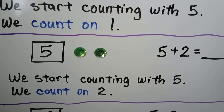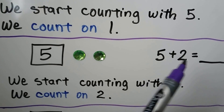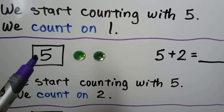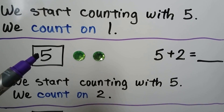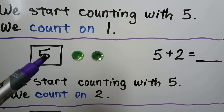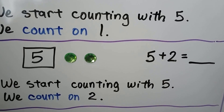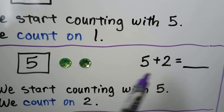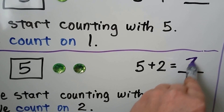If we have 5 and we want to add 2, we start counting on with the 5, we count on 2: 5, 6, 7. 5 plus 2 is equal to 7.